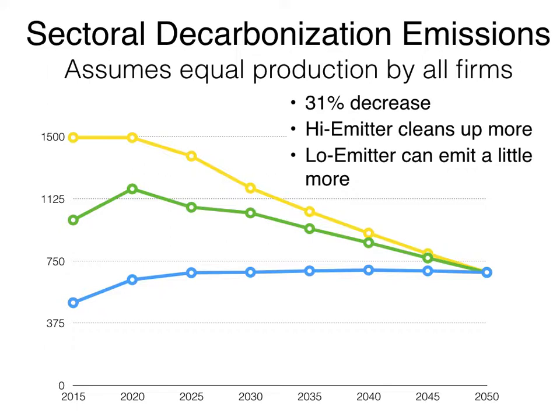It seems to me that over 35 years, all companies should be able to clean up some, because the entire economy is becoming less carbon intensive. So this result seems counterintuitive to me, and it's one of the issues that I think the SDA approach has to address before it can really be universally accepted. We can't let some companies actually increase their emissions over a long period of decarbonization and decoupling of economic activity from carbon emissions. It just doesn't seem right.